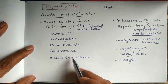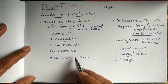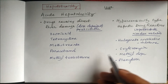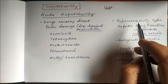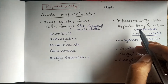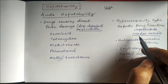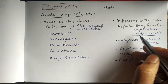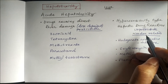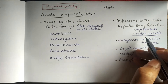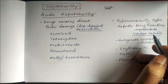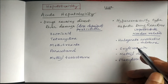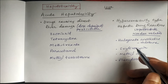Drugs causing direct liver damage and acute hepatotoxicity include isoniazid, tetracycline, methotrexate, paracetamol, and methyl testosterone. Many drugs also produce acute hepatotoxicity by hypersensitivity type hepatic drug reactions, and these reactions are unpredictable, bizarre type, and non-dose related.